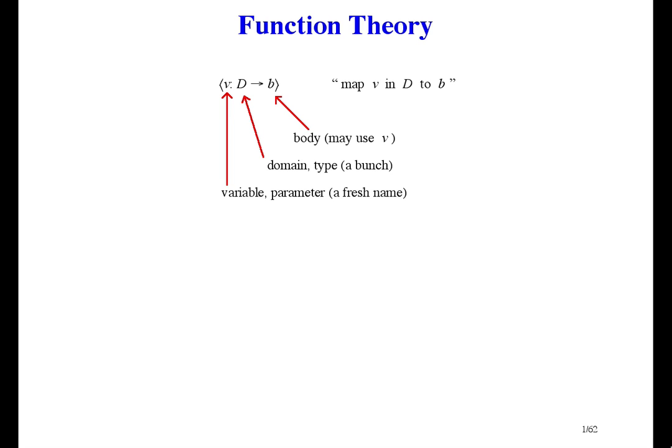Variables are for substitution, and the domain says what expressions can be substituted for the variable. The body is any expression whatever. The only thing different about it is that it can make use of the new local variable. All the normal rules of proof apply within the body, plus one extra rule, namely v colon d, which says the variable is in the domain.